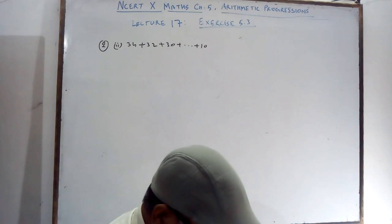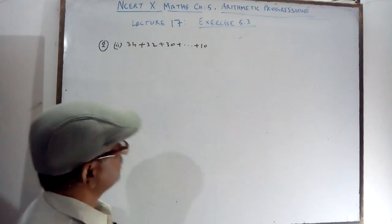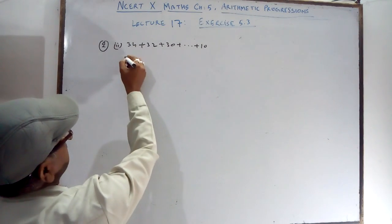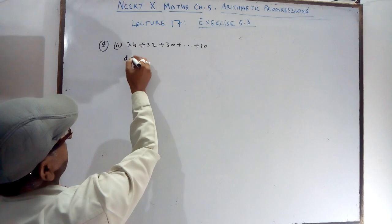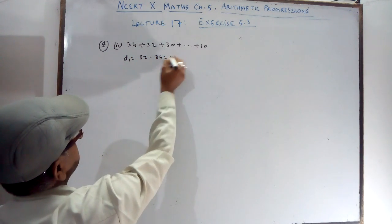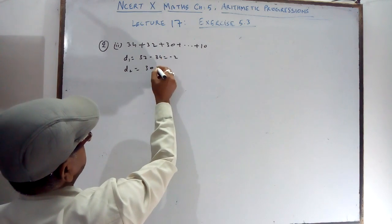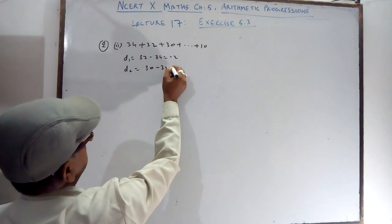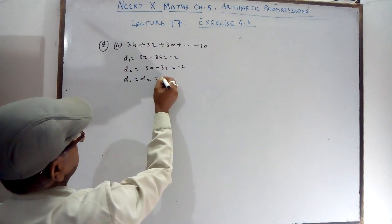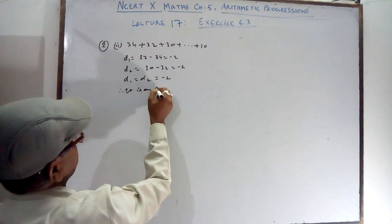First you find out D1 and D2. D1 is A2 minus A1: 32 minus 34 equals minus 2. D2 is A3 minus A2, which is also minus 2. Since D1 equals D2 equals minus 2, therefore it is an AP.